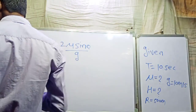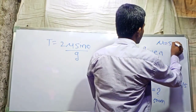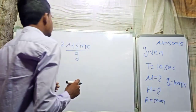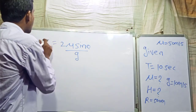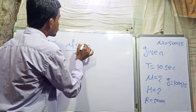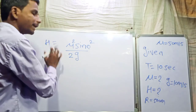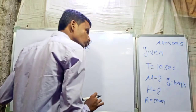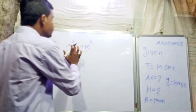Now we need to find the height. u is found as 15 meters per second. To find height, we use the formula: H = u² sin²θ / 2g. Applying this formula for maximum height of the projectile.